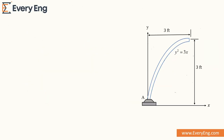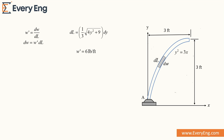Now we are calculating the weight of the uniform rod. We consider a small element whose weight is dw and whose length is dl. The weight per unit length is given in the question, so the weight of the small element equals weight per unit length times the length of the small element. The weight per unit length is 6 pounds per feet, and the small element length is already calculated. Putting both values into the equation gives us our weight expression.